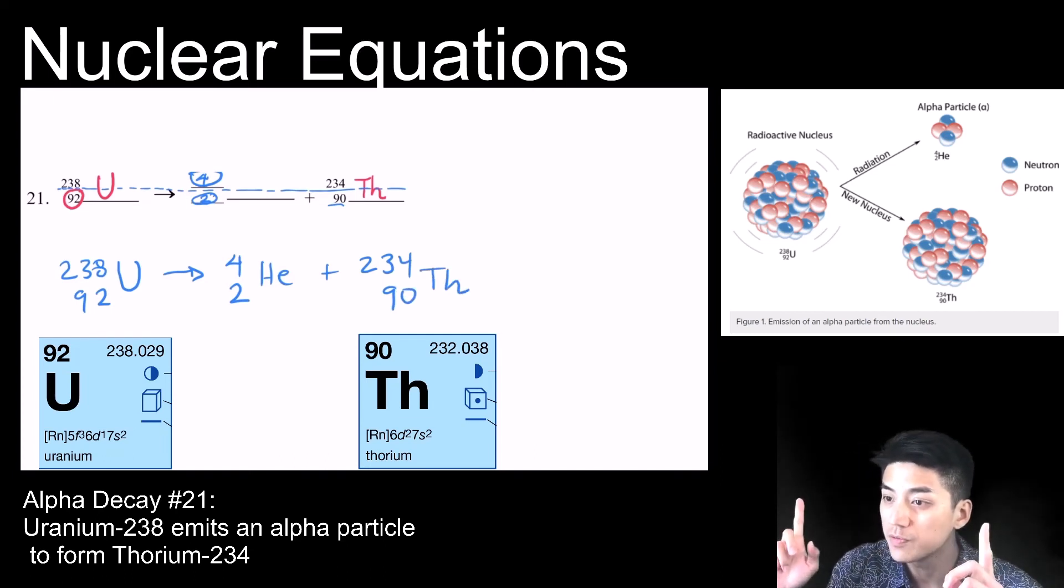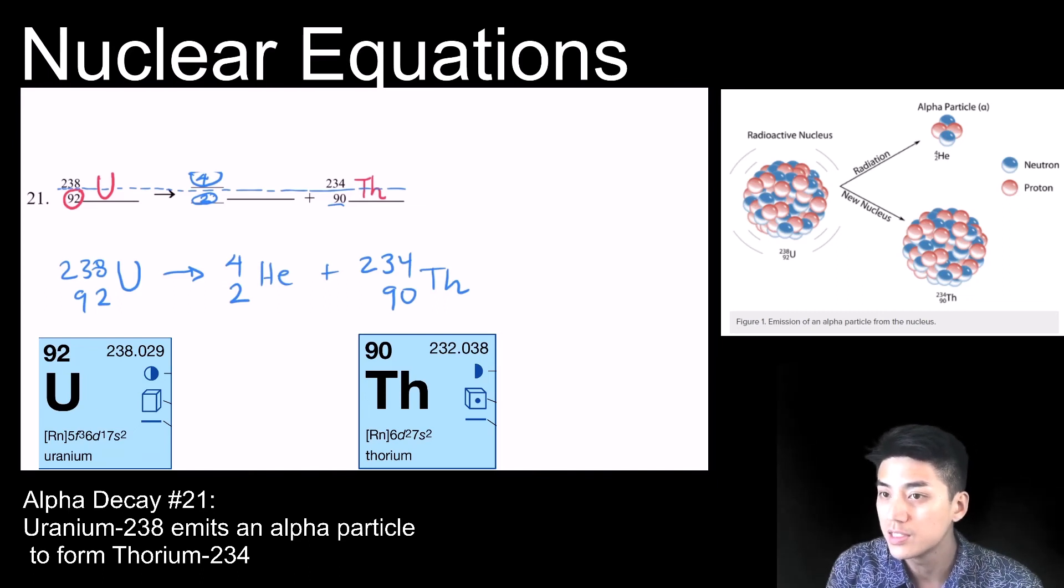Now look at the graphic above me again. And that graphic will explain what we just did in this equation. So you're starting with uranium with a mass of 238.